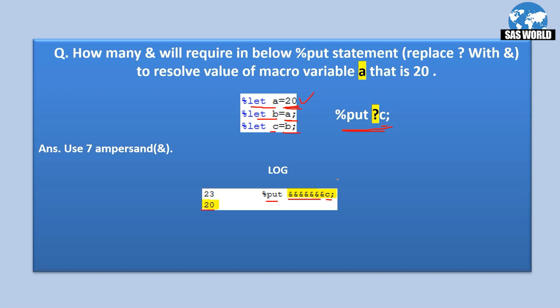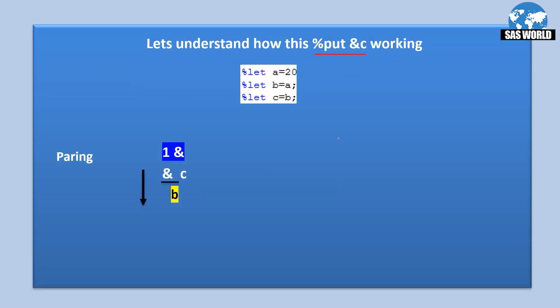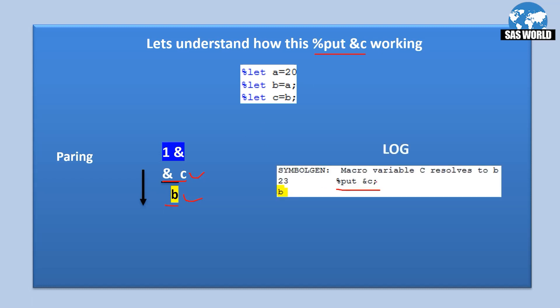Let's understand single ampersand C. To resolve a macro variable's value we need ampersand — this is straightforward. So with ampersand C in a percent put statement, the value of C, which is B, will be printed in the log. I've enabled the symbol gen option, which is a SAS macro debugging option. If you don't know about it, please watch my video on SAS debugging options — I'll put the link in the description section.